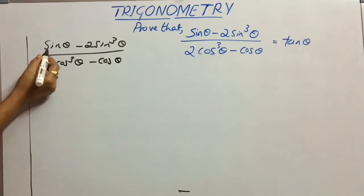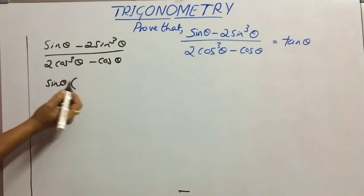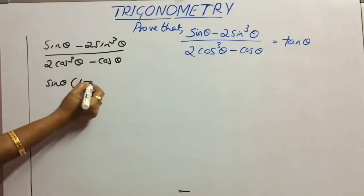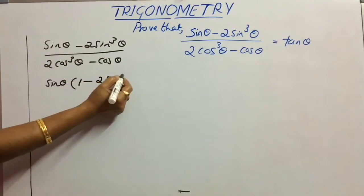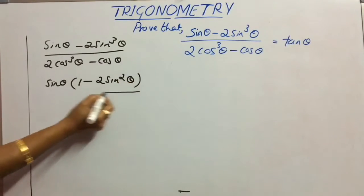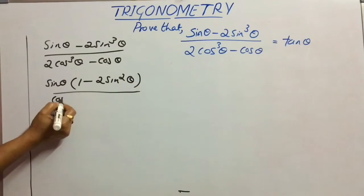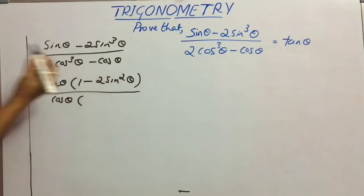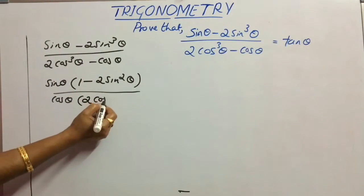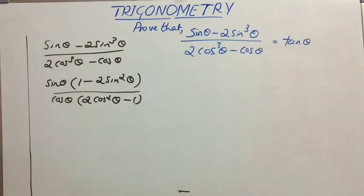If you observe the numerator, we can take sin θ as the common factor outside, so 1 - 2sin²θ remains. Similarly, in the denominator, if we take cos θ as the common factor outside, then 2cos²θ - 1 remains.